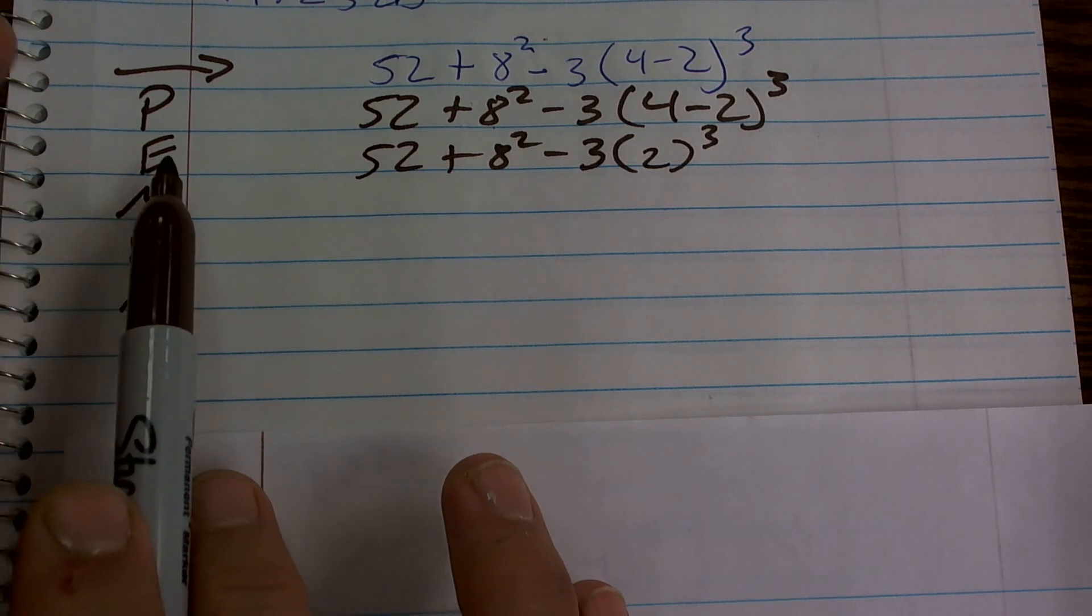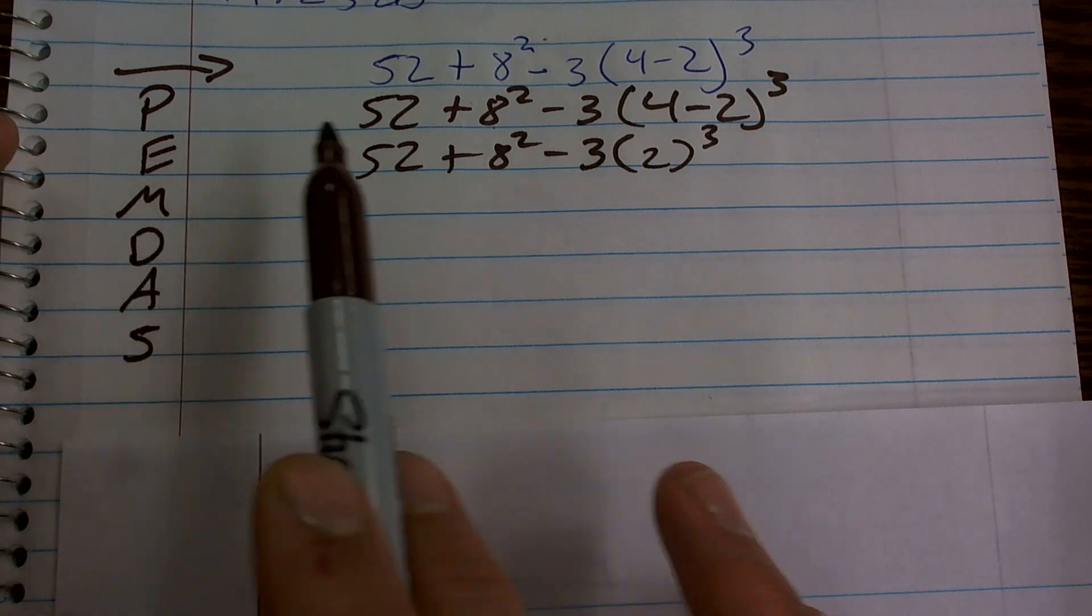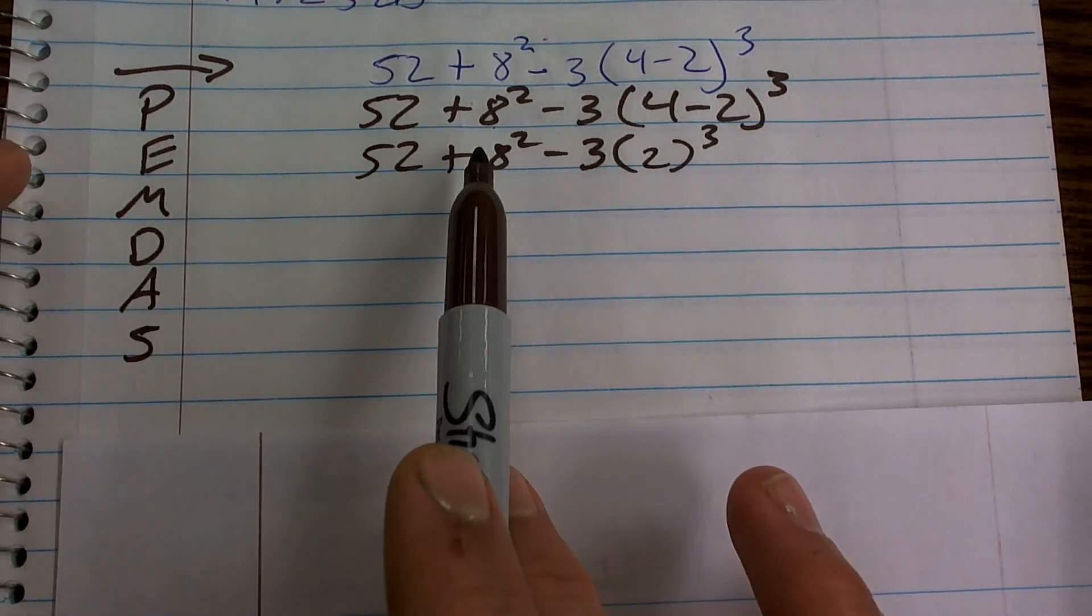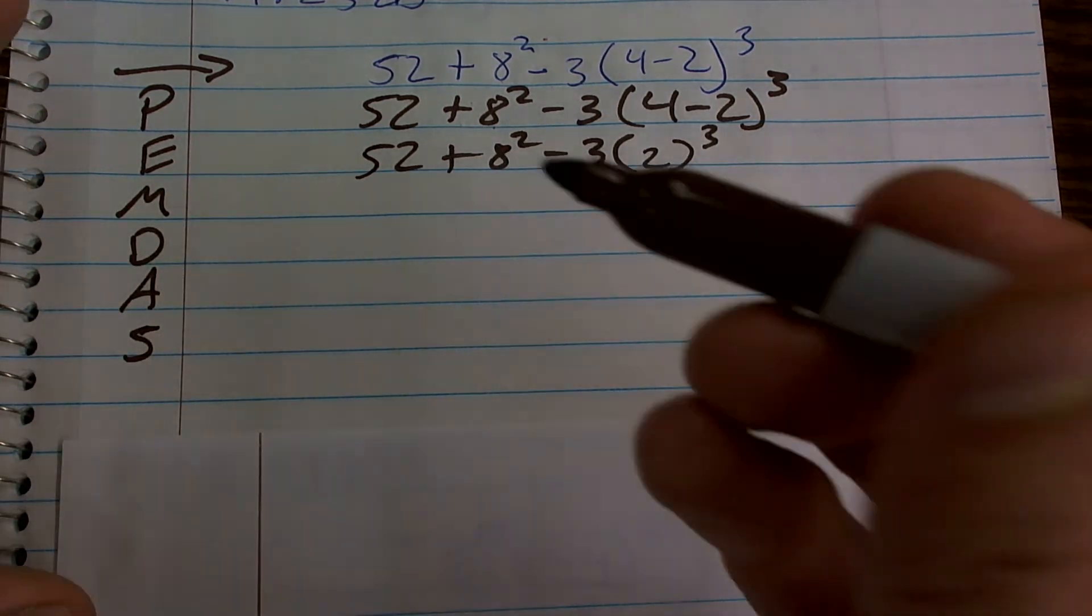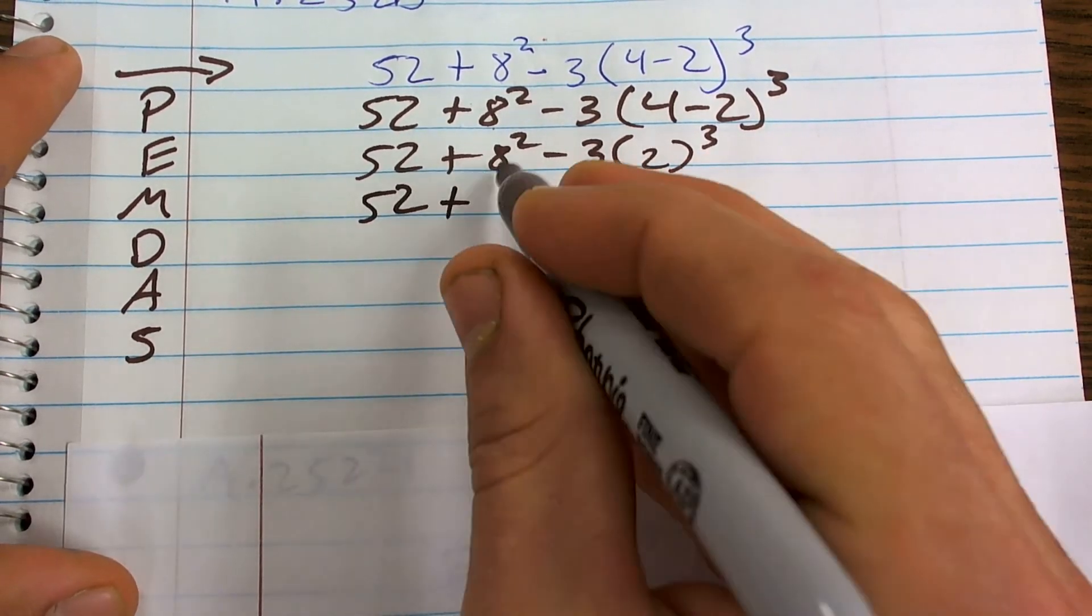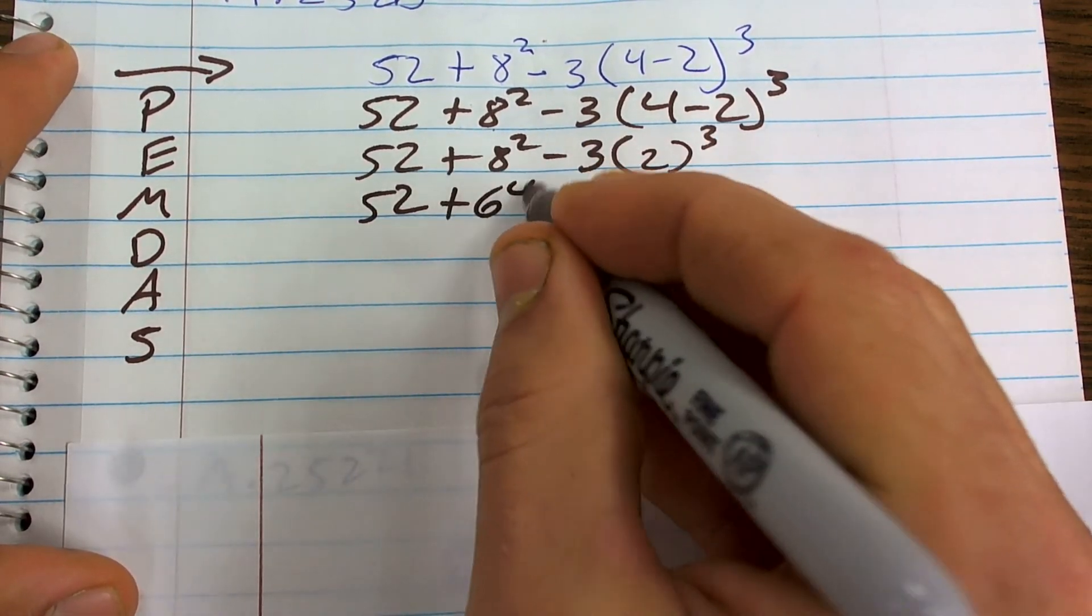So for exponents or powers, I need to do all the numbers that are raised to a power. So here I have 8 squared and I have 2 cubed. So I have 52 plus 8 squared, which is 64.